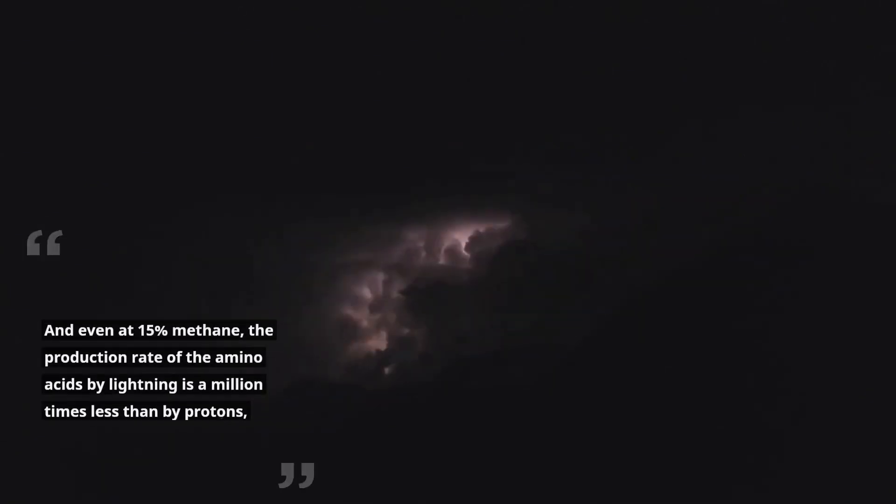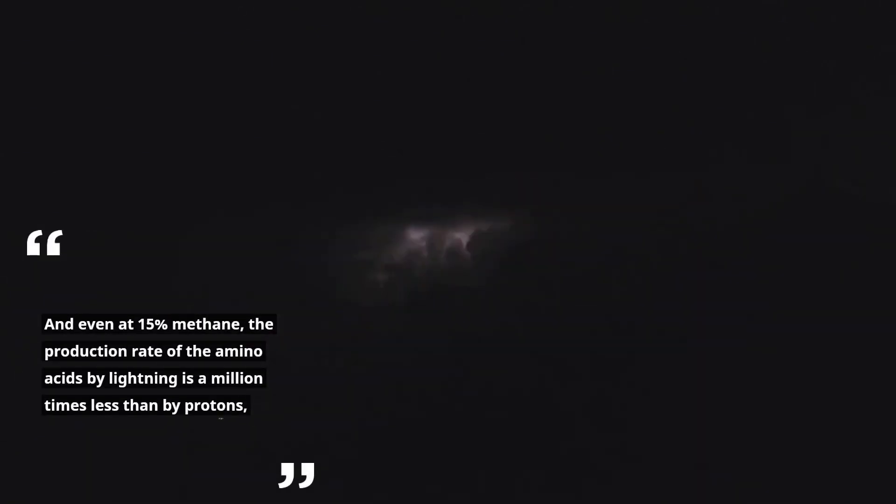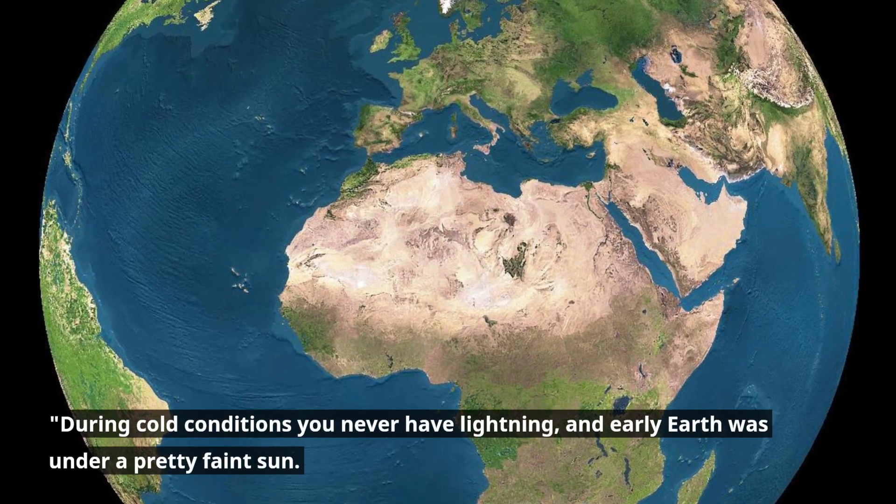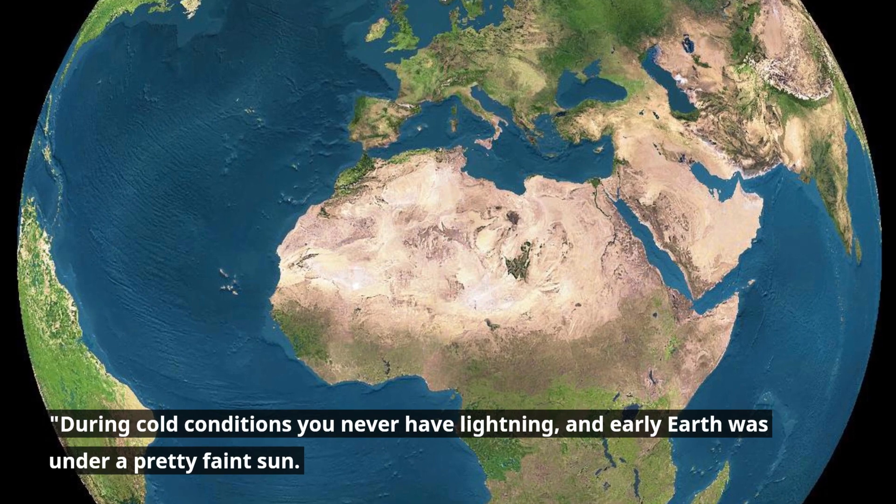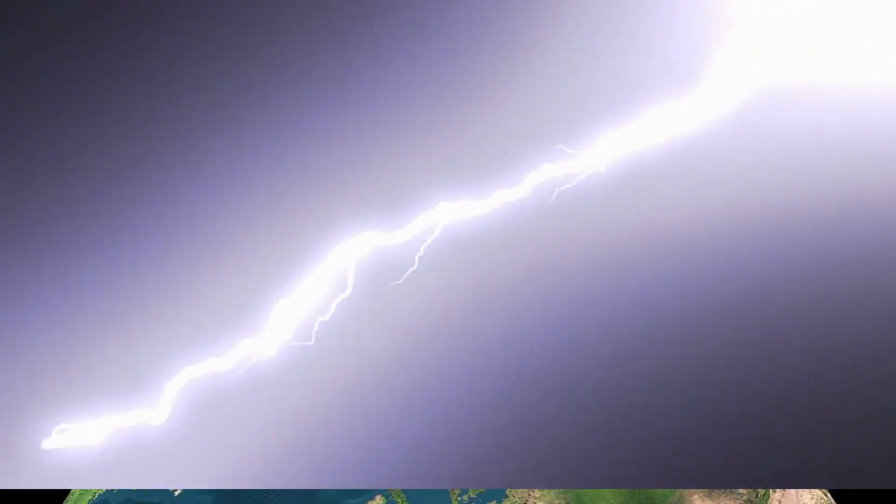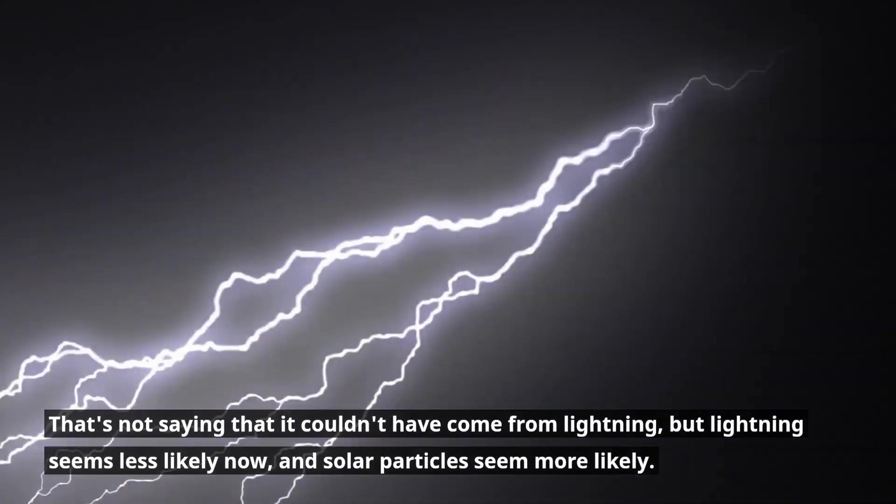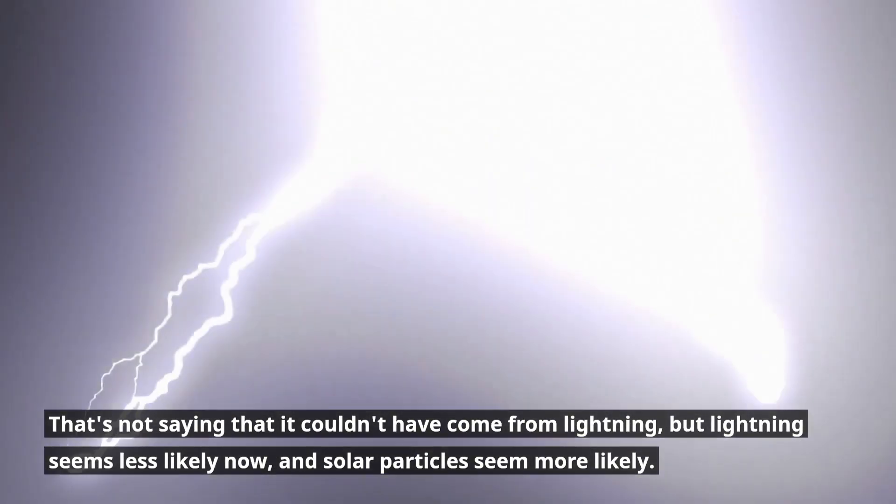And even at 15% methane, the production rate of the amino acids by lightning is a million times less than by protons. During cold conditions you never have lightning, and early Earth was under a pretty faint sun. That's not saying that it couldn't have come from lightning, but lightning seems less likely now, and solar particles seem more likely.